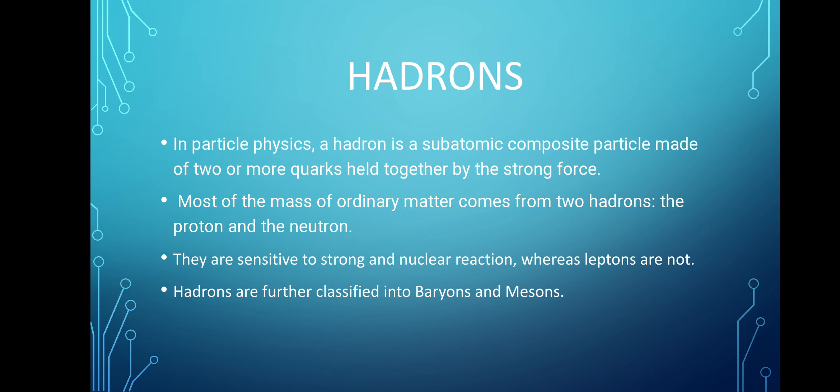Let us look at another composite particle, Hadron. Hadron is a subatomic particle made of 2 or more quarks. They are bound together by the strong force. Proton and neutron are made up of 3 quarks. Thus proton and neutron is a Hadron. Hadrons are sensitive to strong and nuclear reaction. Leptons are not simply because they are found outside the nucleus.